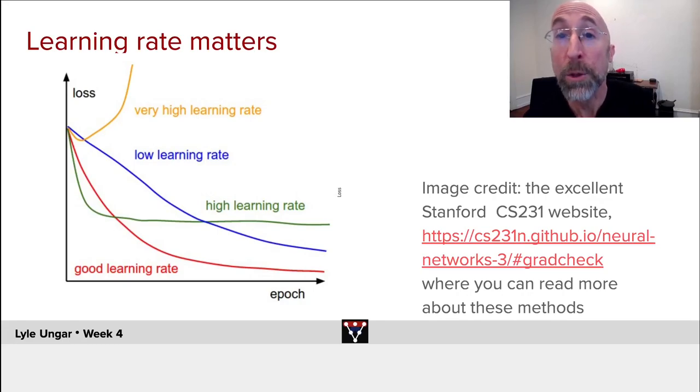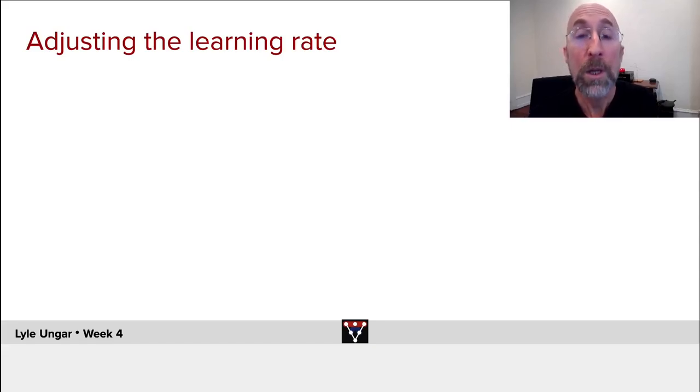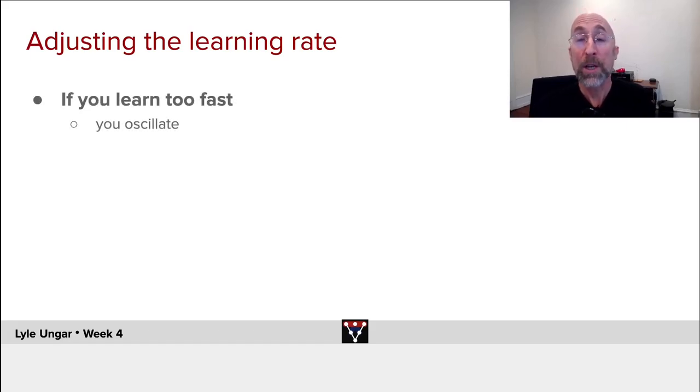So what do we want to do? We want to adjust the learning rate in a way that is optimal. If you learn too fast, then you bounce up, bounce farther, bounce farther, you bounce all the way out of your local optima.